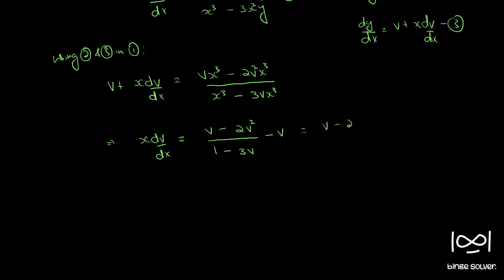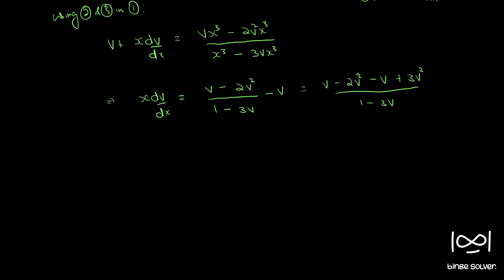Expanding the numerator, we have v minus 2v squared minus v plus 3v squared. So x dv by dx equals v squared divided by (1 minus 3v), since v cancels and 3v squared minus 2v squared equals v squared.